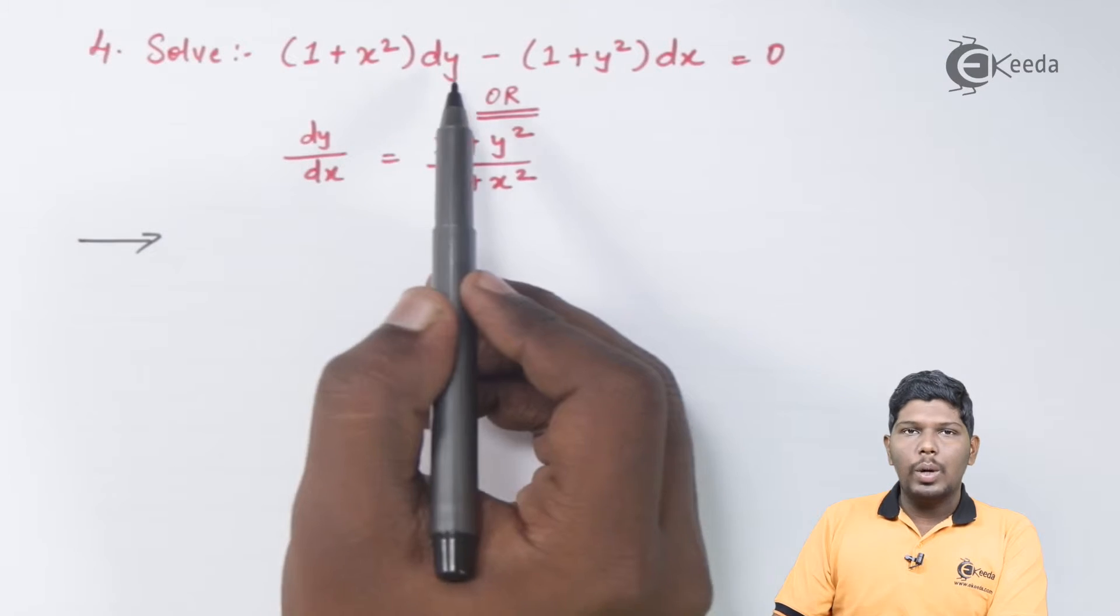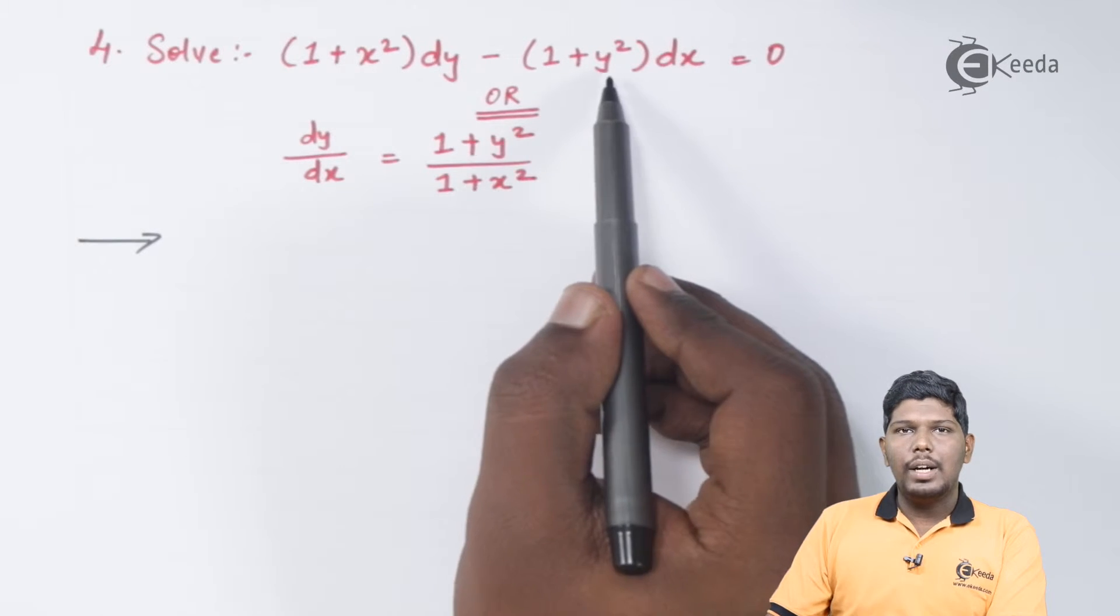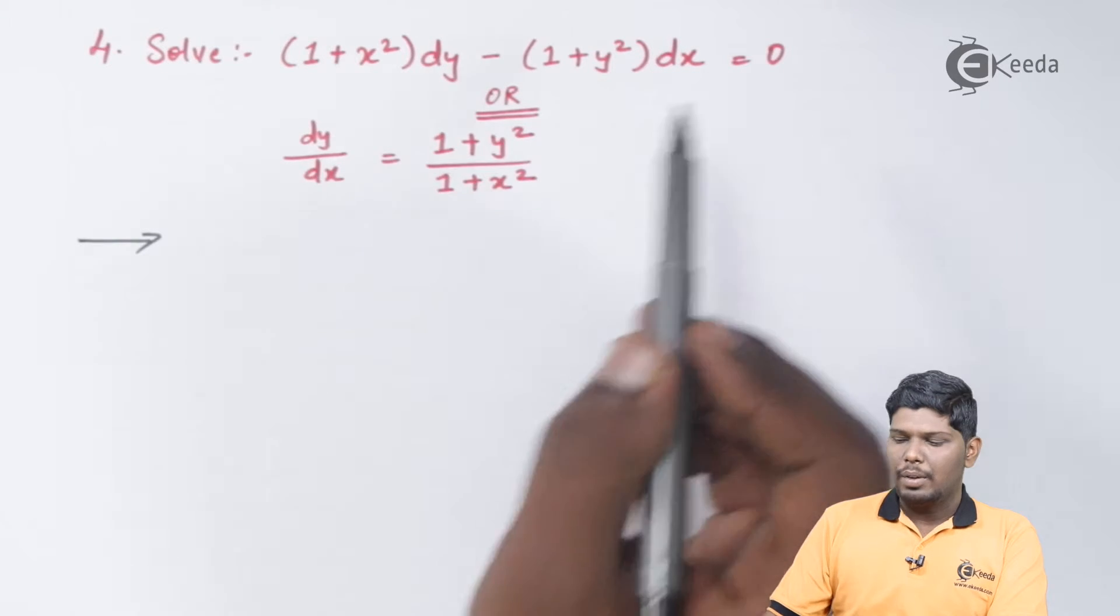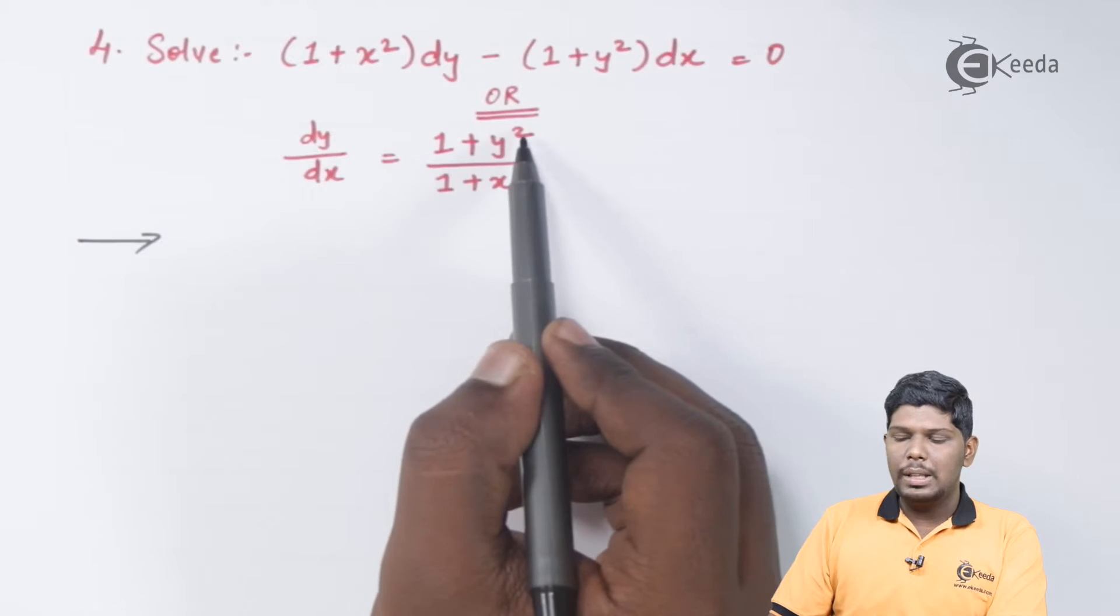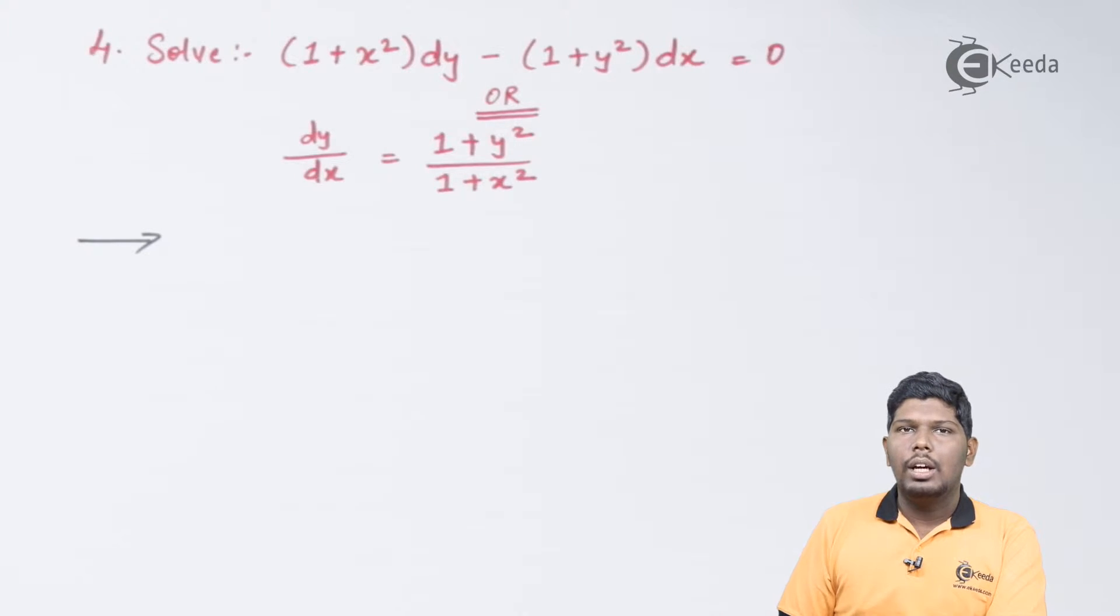Solve (1 + x²)dy - (1 + y²)dx = 0, or the alternate form dy/dx = (1 + y²)/(1 + x²). You can consider any one and start solving.